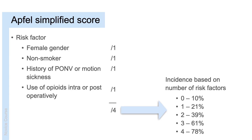The APFEL score is a way of trying to predict the chance of a patient having post-operative nausea and vomiting. We can see the risk factors here in this list: female gender, non-smoker, previous history of post-operative nausea and vomiting or motion sickness, and also the use of opioids — all the things that we know increase the risk. There's a score out of one for each of these, and on the right we can see the predicted chance of having post-operative nausea and vomiting based on the score out of four. This simplified score is quite quick and very easy to calculate for a patient, for example, when you see them in the pre-assessment clinic.